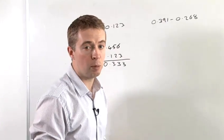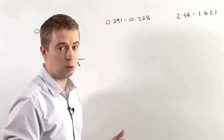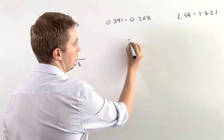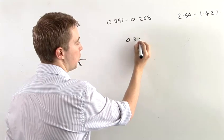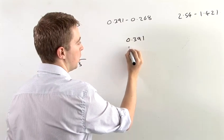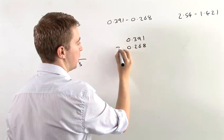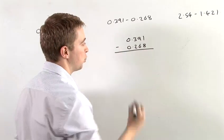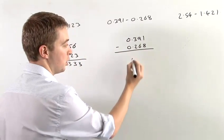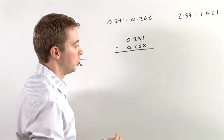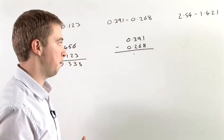We'll move on to a slightly more complicated example, and you'll see why that's so in it. 0.391, and we're taking away 0.268. So what I'm going to ask you to do here for good practice is to just put the point at the bottom so you know it's always going to be there.